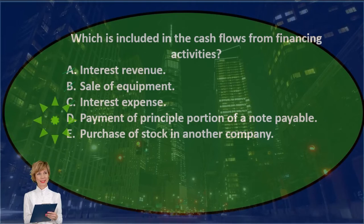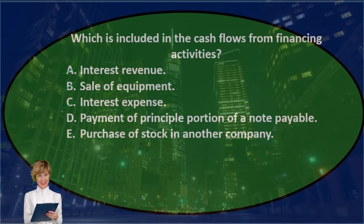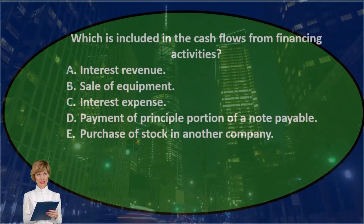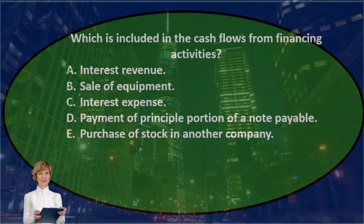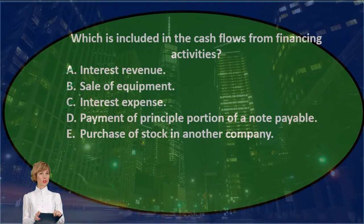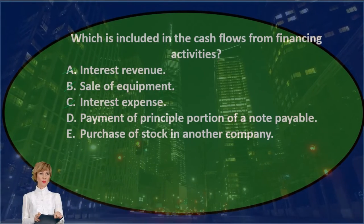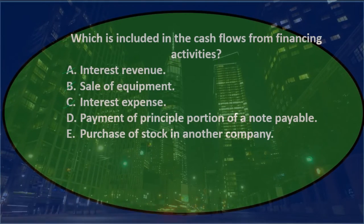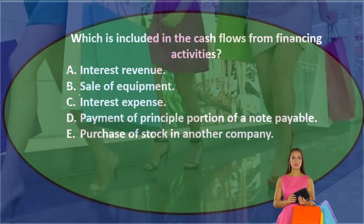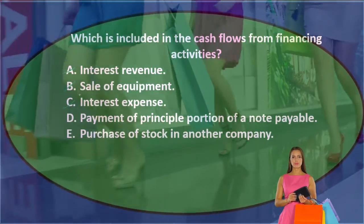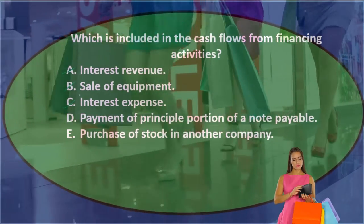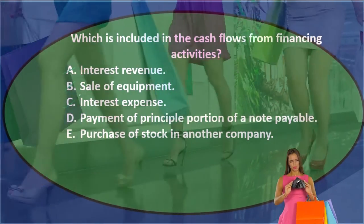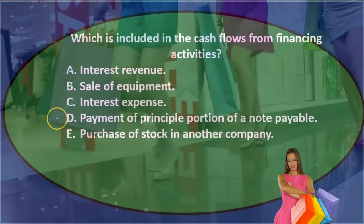D) payment of the principal portion of a note payable — the journal entry is credit cash and debit note payable. Neither of those is an income statement account — no revenue or expenses. Neither deals with equipment purchased or sold. We're paying back a loan, so that's not operating, not investing, but financing. So D looks like the answer.